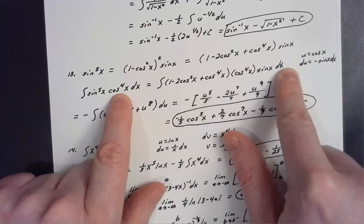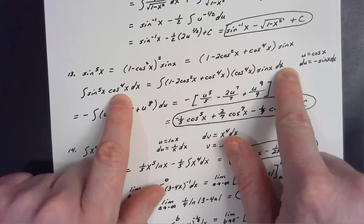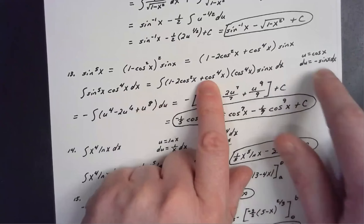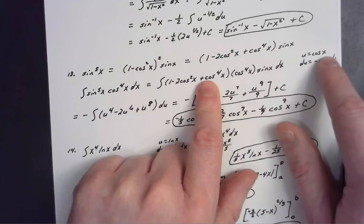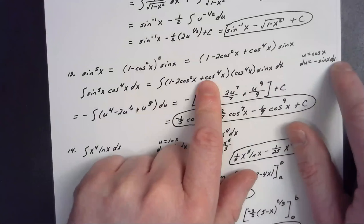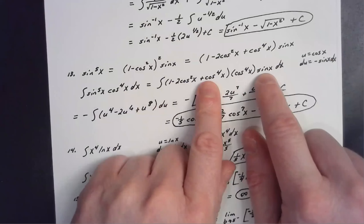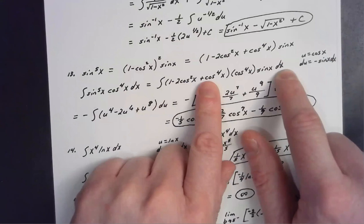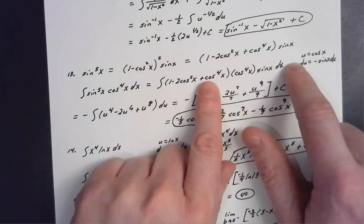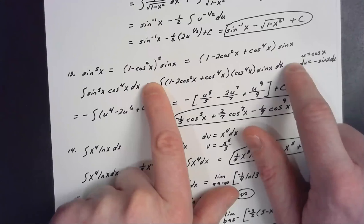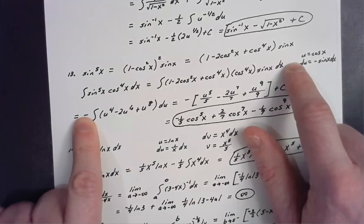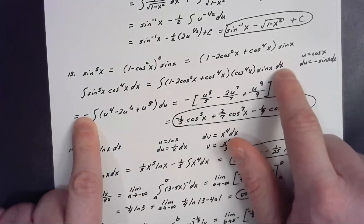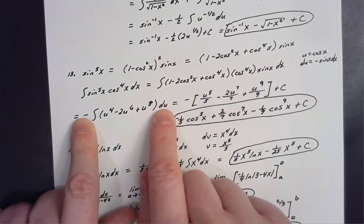Substituting back, the integral of sin⁵x cos⁴x dx becomes the integral of (1 − 2cos²x + cos⁴x) times cos⁴x times sin x dx. This is set up for a simple substitution: let u = cos x, so du = −sin x dx. I multiply inside by negative one and outside by negative one to compensate.